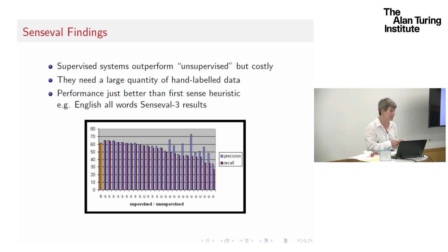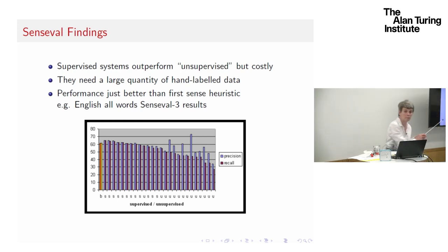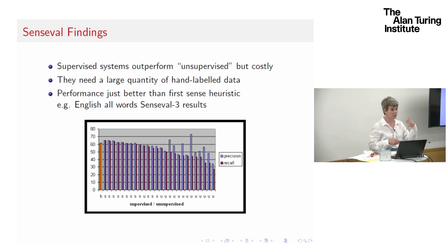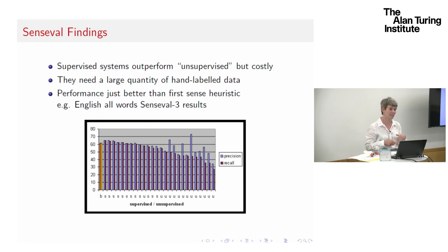The other thing to note is the baseline of the first-sense heuristic — just picking the first sense in WordNet. The orange and yellow spikes on the left of the chart are that baseline. And systems using quite complicated machine learning with lots of training data were doing just a few percentage points more than that. So the question is: is this good enough for all this effort? Is this really helping?